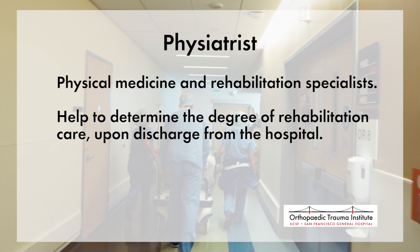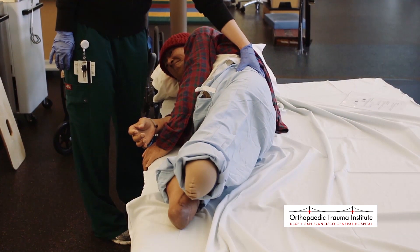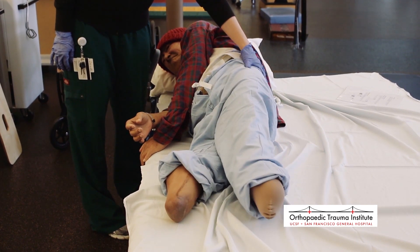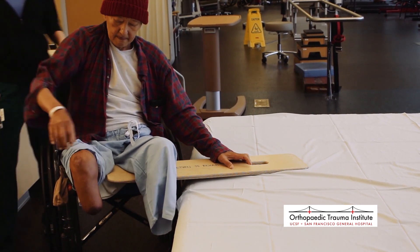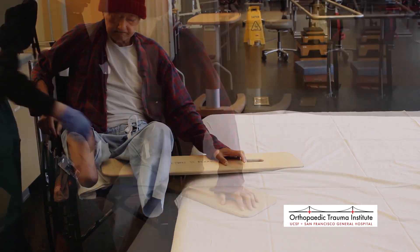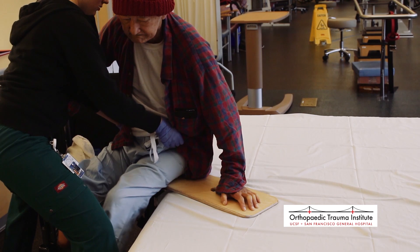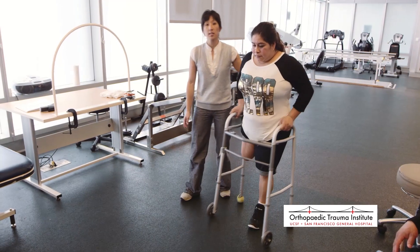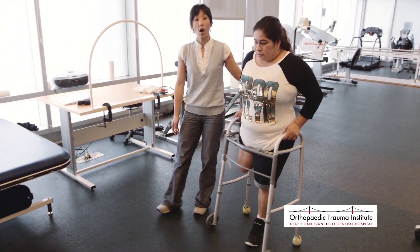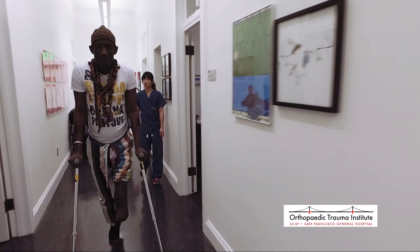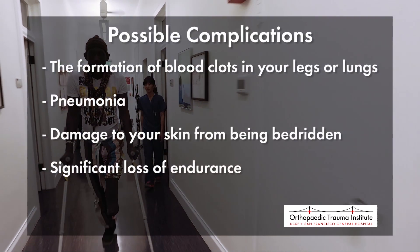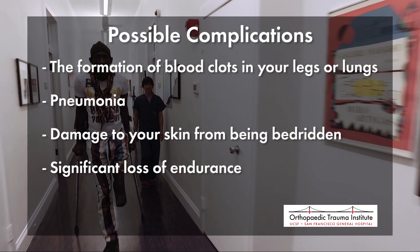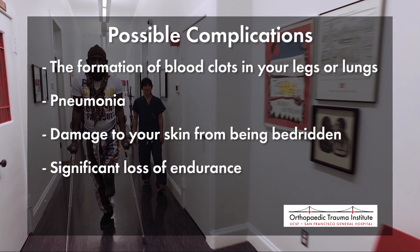Ideally, working with rehabilitation specialists should begin prior to amputation, but in many cases you will begin work with these specialists shortly after surgery, with the goal of improving your ability to mobilize as soon as possible. Depending on the type of surgery, goals might include using a walker or wheelchair. By mobilizing soon after surgery, you will be able to prevent complications such as blood clots, pneumonia, skin damage, and significant loss of endurance.